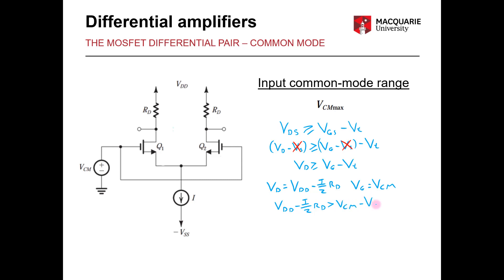And once we have this expression we can just do some simple rearrangement to get that in terms of VCM. So here we now can see that VCM must be less than or equal to our threshold voltage VT plus VDD minus the drop across the resistor.